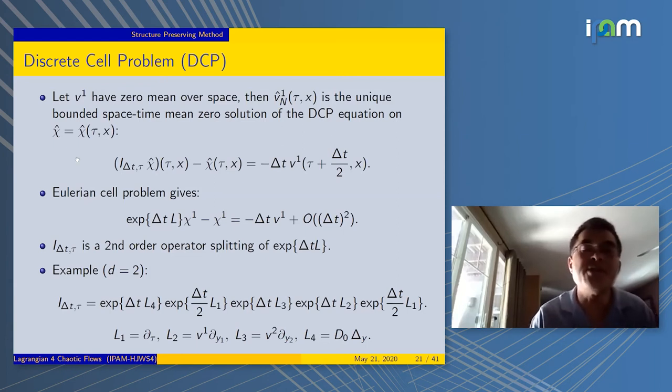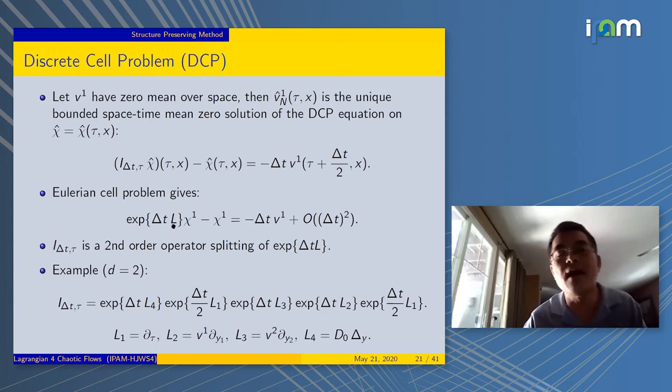This is what we call the discrete cell problem. If you take the continuous cell problem, let's call the left side operator L, you exponentiate with time delta T. If you Taylor expand formally, you cancel out the chi, you get exactly this quantity delta T V_1, because this follows from the continuous cell problem. This I is some kind of discretization of e^{delta T L}.